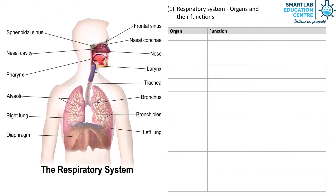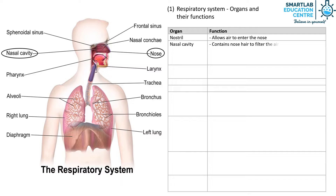Let's study the organs of the respiratory system in greater detail. Firstly, we have the nostril — it allows air to enter the nose. Next, we have the nasal cavity, which contains nose hair to filter the air passing through.